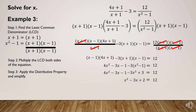We transpose positive 12 to the other side to equate the equation to zero. Adding -12 to both sides: x² - 3x + 2 - 12 = 0, then combining constants gives x² - 3x - 10 = 0. The expression on the left side is now a quadratic expression.